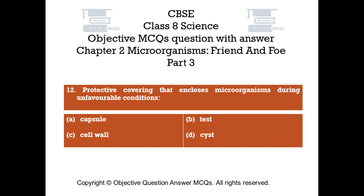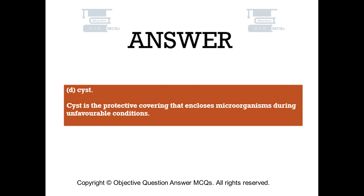Question number 12. Protective covering that encloses microorganisms during unfavorable conditions. Option A: Capsule. Option B: Test. Option C: Cell wall. Option D: Cyst. The right answer is option D — Cyst. Cyst is the protective covering that encloses microorganisms during unfavorable conditions.